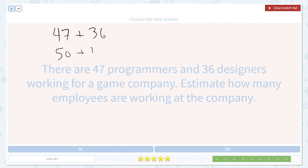47 is going to round up to 50 because 7 is more than 5. 36 is going to round up to 40 because 6 is more than 5. This gives us a total of 90 employees.